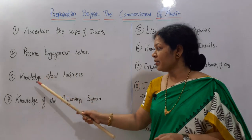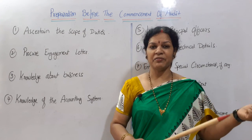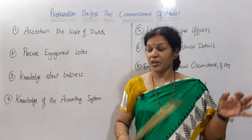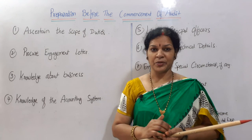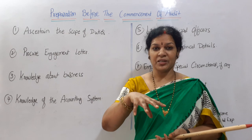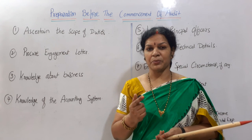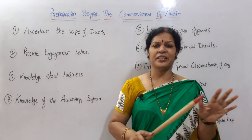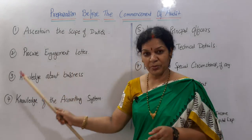Once the engagement letter is obtained, the third step is knowledge about the business. Simply getting into the company and interacting with the accounts department is not the right way to do auditing. The auditor should first understand what kind of business it is, how the manufacturing process works, how many branches they have, the overall business system, who the board of directors are, and department-wise who the employees and heads of departments are — everything in detail.